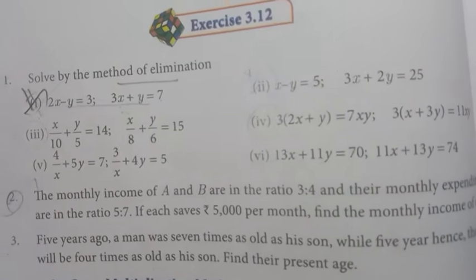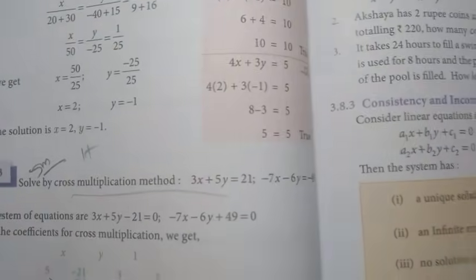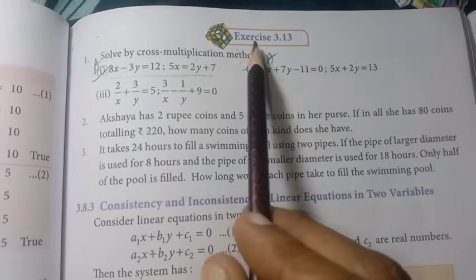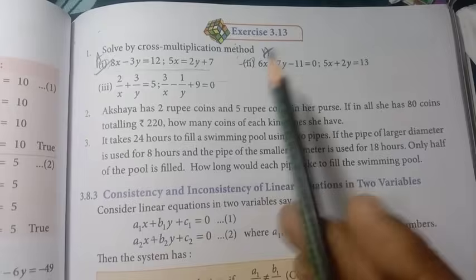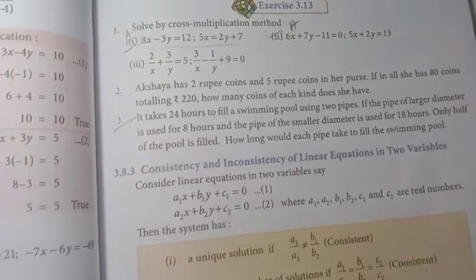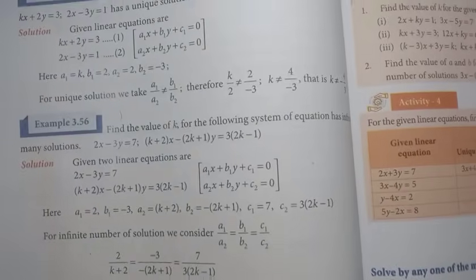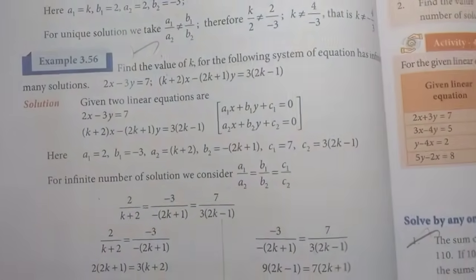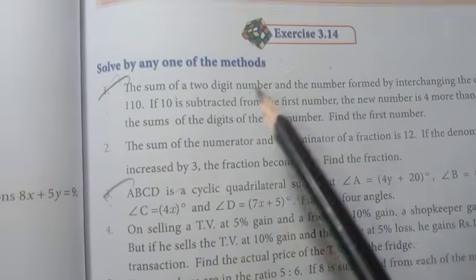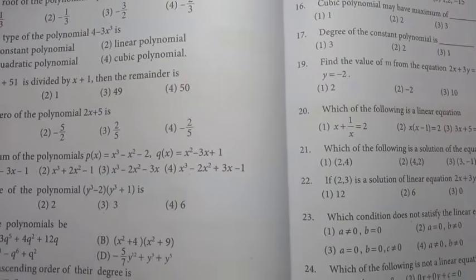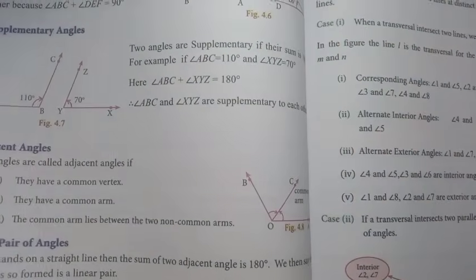Page 127, Example 3.50 and Exercise 3.12: 1st one — find the method, solve by elimination. Work out 1st and 2nd. Next page number 129, Example 3.52 important, Example 3.53 important. Page 131, Exercise 3.13: 1st — work out all problems, 3rd one important. Example 3.54 important, Example 3.56 important. Page 133, Exercise 3.14: 1st, 3rd, 5th, 6th — practice and work out.